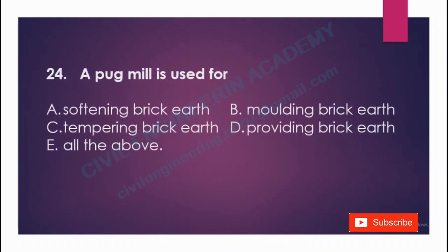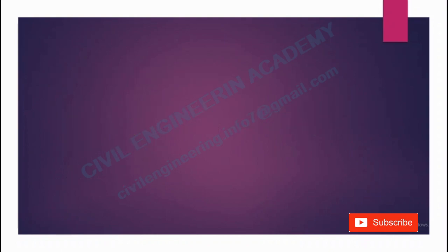A pug mill is used for: A) softening brickwork, B) molding brickwork, C) tempering brickwork, D) providing brickwork, E) all of the above. The answer is tempering brickwork. Note: pug mill is also used for clay preparation.